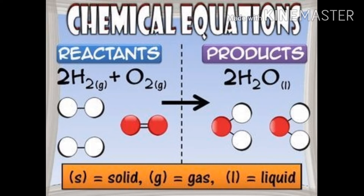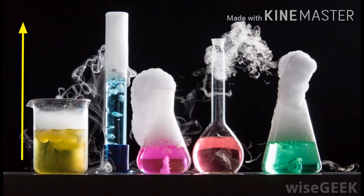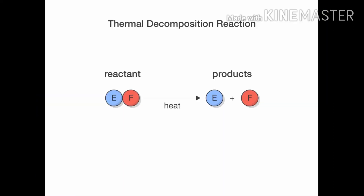Chemical equation लिहिताना reactants हे left side ला लिहिले जातात आणि products हे right side ला लिहिले जातात, आणि जो arrow असतो तो reactant कडून product कडे दाखवला जातो. That means the arrow indicates the direction of reaction. If there are two or more reactants and products, they are separated with the plus sign. Chemical equation हे informative बनवण्यासाठी reactants आणि products ची physical state — मंजे ते gas आहे की liquid आहे की solid आहे — हे base ला दर्शवले जाते.